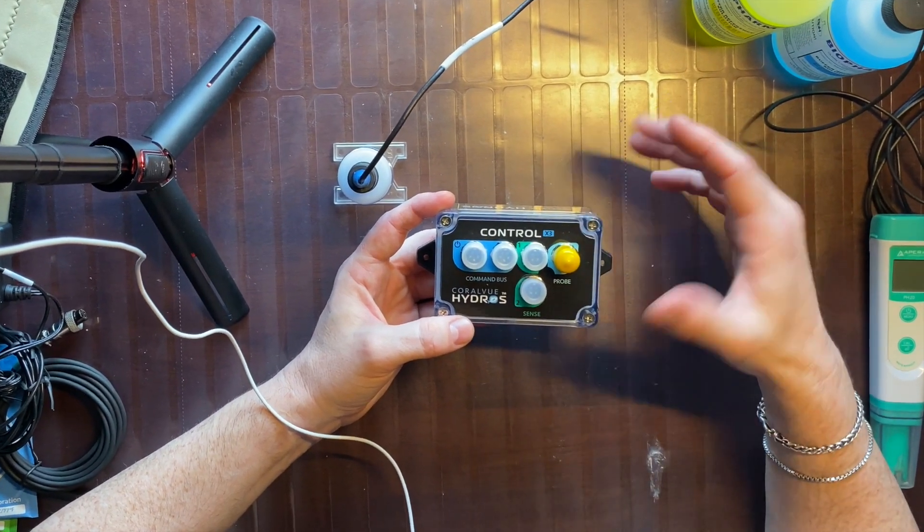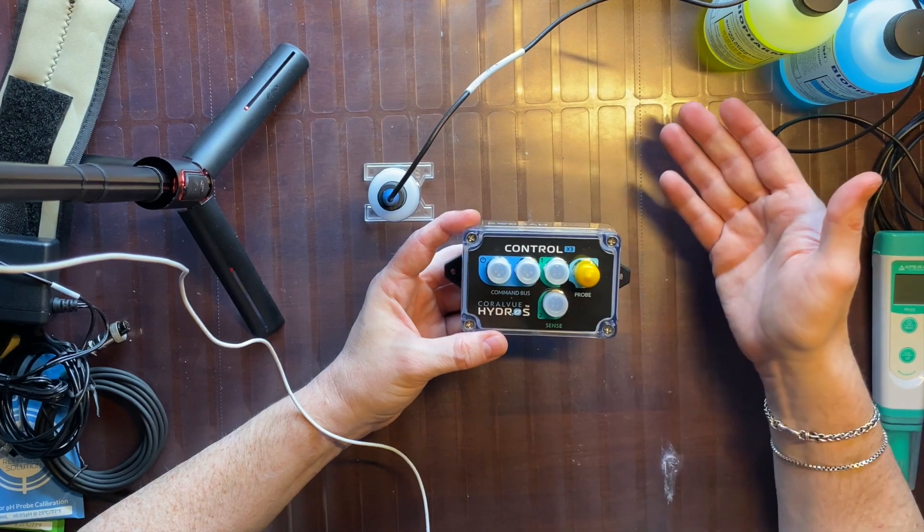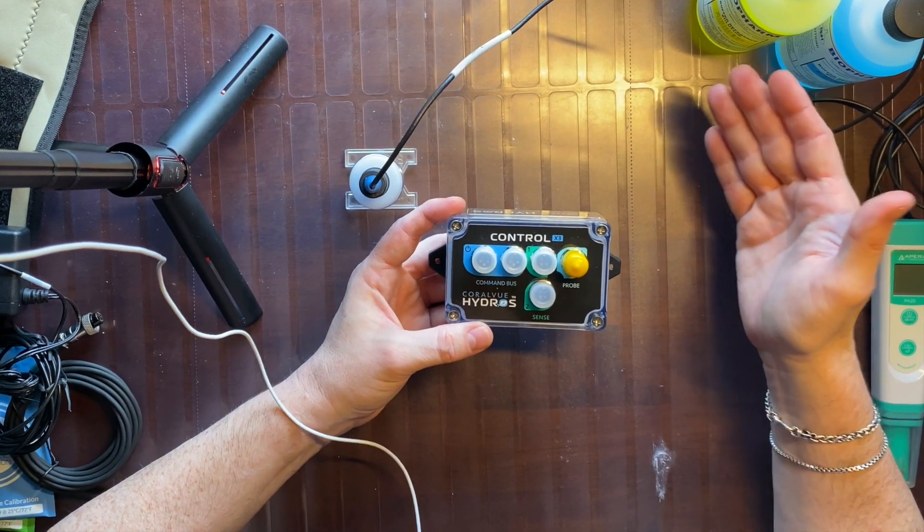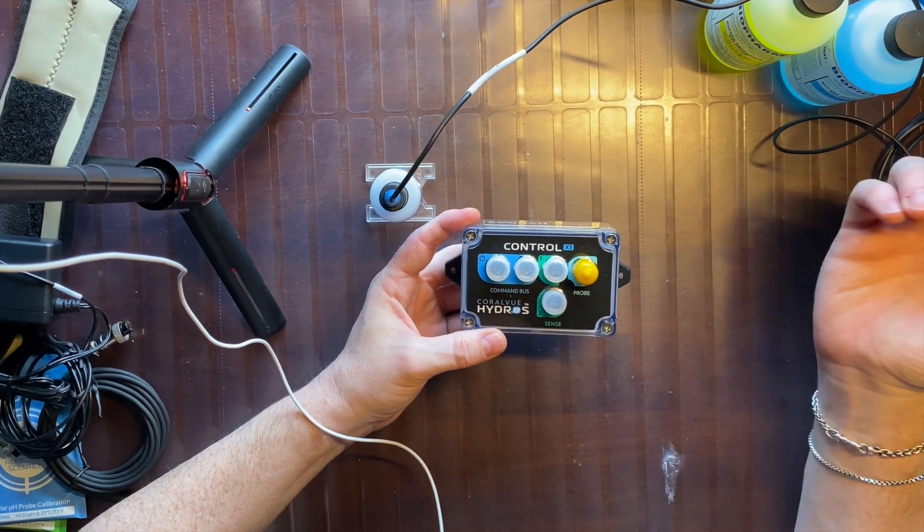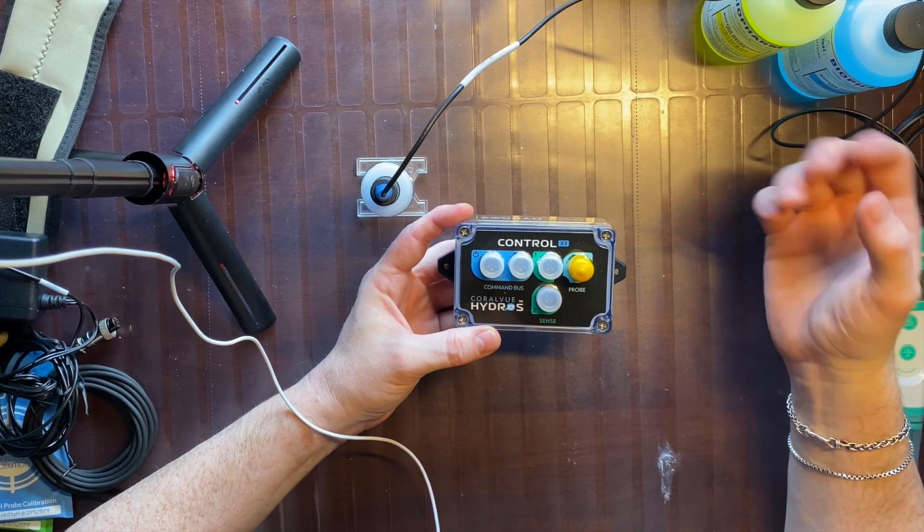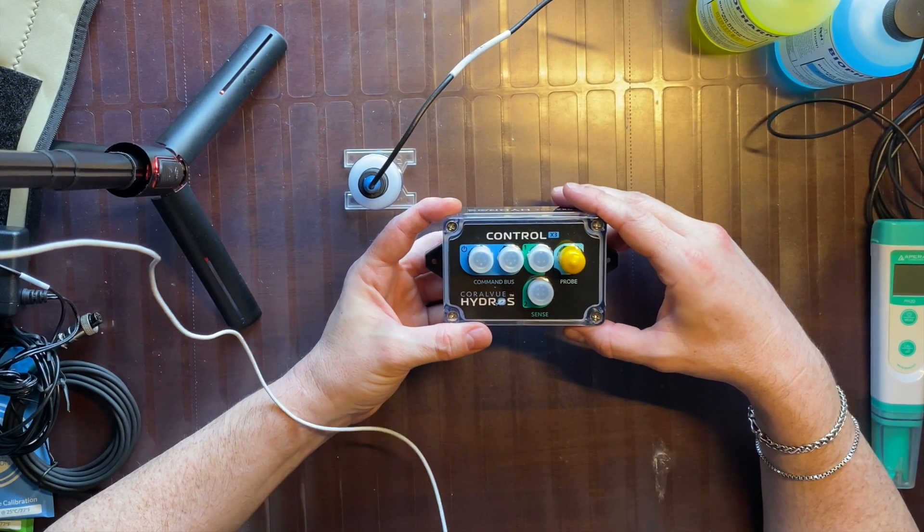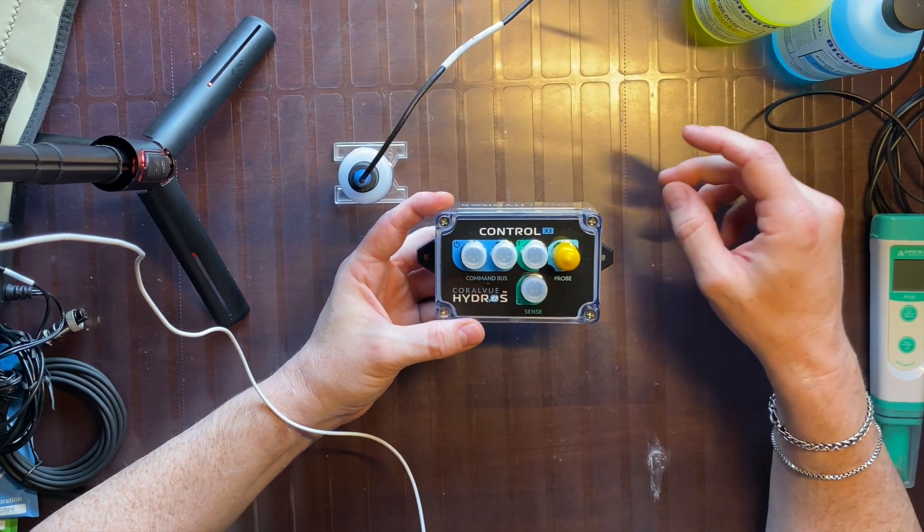So even if the Apex failed, specifically just the pH and temp, one of those, I would see that there's something off, and it would at least alert me to take a look.